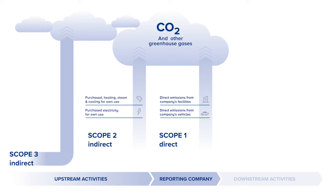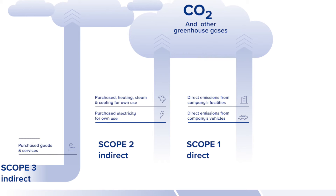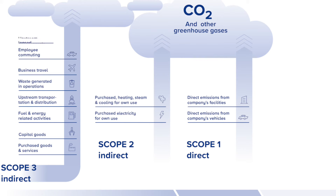Upstream emissions are related to purchased or acquired goods and services. These upstream emissions are classified in eight categories: Purchased goods and services, Capital goods, Fuel and energy related activities, Upstream transportation and distribution, Waste generated in operations, Business travel, Employee commuting, and Upstream leased assets.